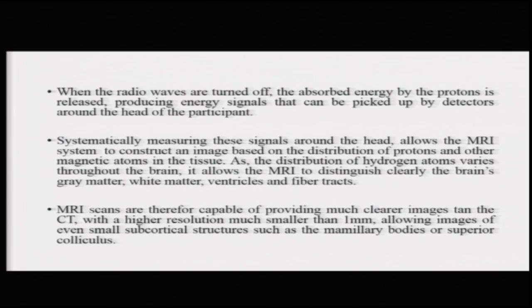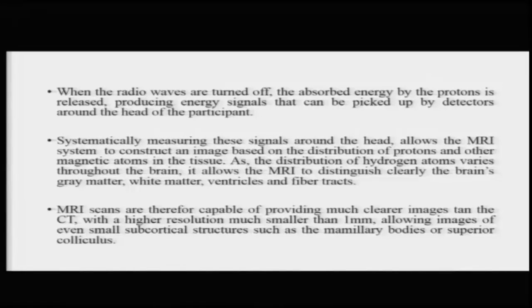As the distribution of hydrogen atoms varies throughout the brain, it allows the MRI to clearly distinguish the brain's gray matter, white matter, ventricles, and fiber tracks. MRI scans are therefore capable of providing much clearer images than CT scans, with a much higher resolution of up to 1 mm, allowing images to capture very small subcortical structures such as the mammillary bodies, the superior colliculi, and nuclei in the midbrain.